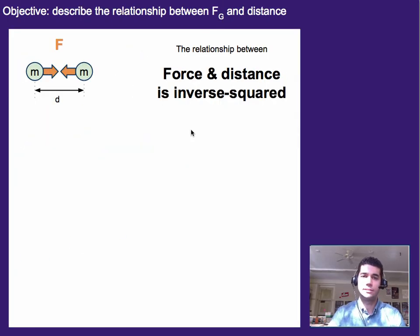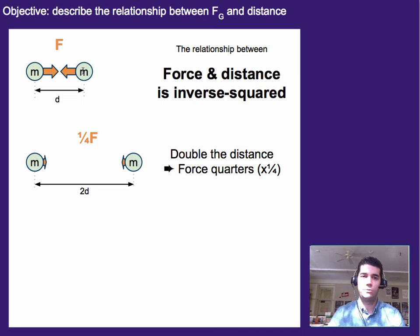Now between force and distance, it's actually an inverse squared relationship. So what that means is if we have two masses and they're separated by a certain distance, if we double that distance, the force is actually cut to one fourth of the original value.